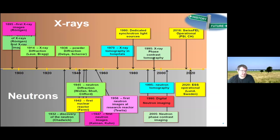Looking at the comparison between X-rays and neutrons: neutrons have always run a bit behind X-rays. The neutron was discovered in 1932 by Chadwick, and the first neutron images came just a few years later. X-ray tomography was already being done in hospitals in the 1970s, while the first neutron tomography was only done in 1995 — 25 years later. What really made the difference was the ability to do digital imaging. The time-of-flight business for imaging only started after 2000.